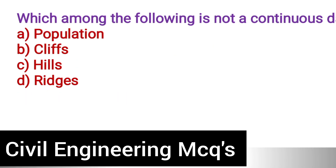Next question: Which among the following is NOT continuous data? Option A: Population. Option B: Cliff. Option C: Hills. Option D: Ridges. The correct answer is option A, population.